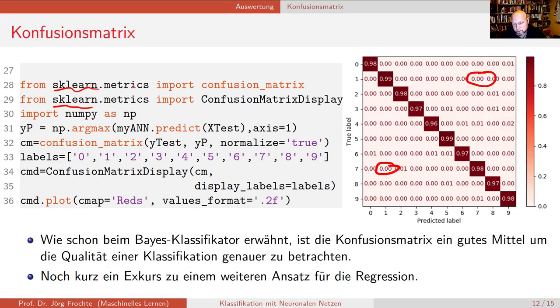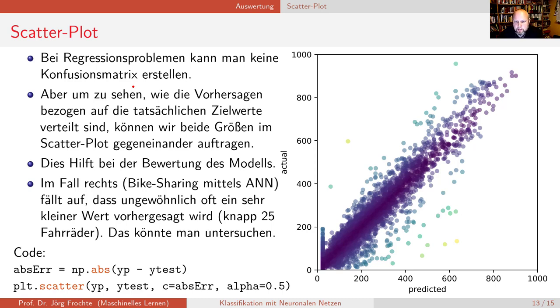Noch ein Hinweis zur Qualitätsbeurteilung bei Regressionsverfahren. Da haben wir ja klar den mittleren Fehler, den maximalen Fehler, den minimalen Fehler. Wir haben uns auch ein Histogramm schon mal ausgeben lassen. Das sind alles wichtige Möglichkeiten, um die Qualität einer Regression zu beurteilen. Eine andere Möglichkeit, die sehr, sehr gut ist, ist, dass Sie einfach einen Scatterplot gegeneinander machen.